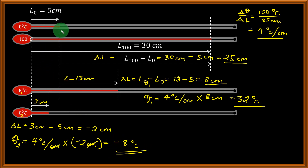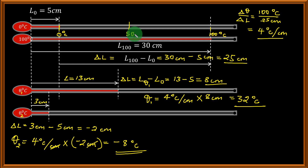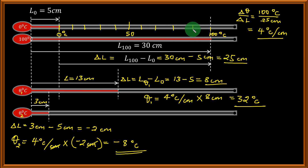Remember, 0 degrees Celsius is marked at the lower fixed point, and 100 degrees Celsius at the upper fixed point. The space between 0 and 100 degrees Celsius can be marked by first putting a mark at the center for 50 degrees Celsius, then dividing from 0 to 50 into 5 spaces, and from 50 to 100 into another 5 spaces, so that each space represents 10 degrees Celsius.